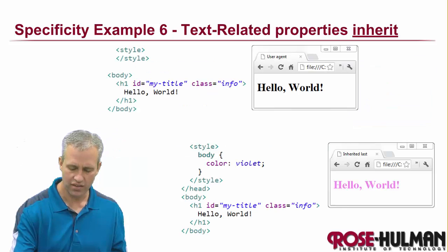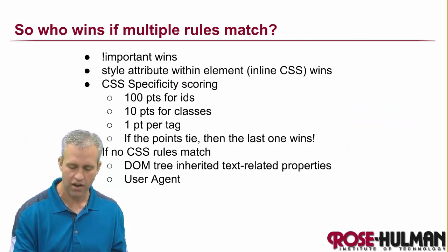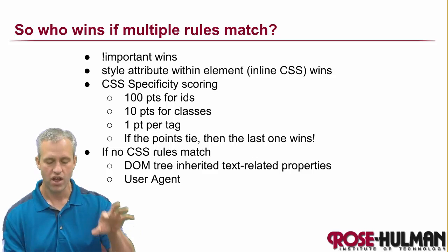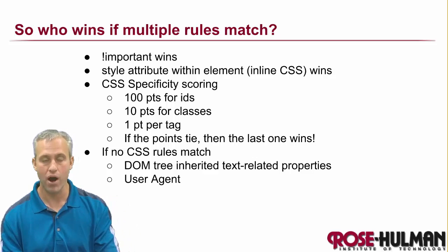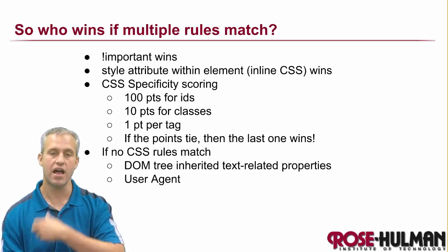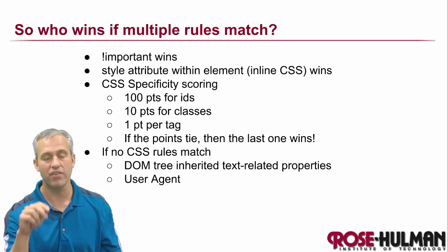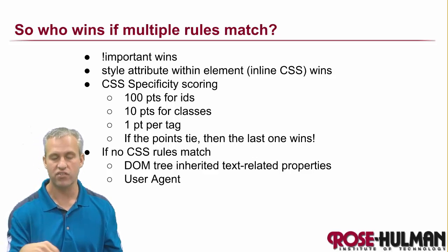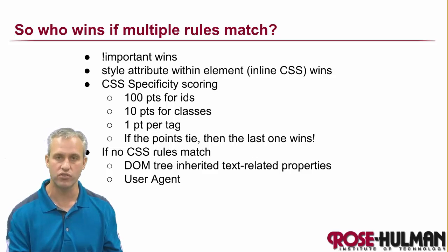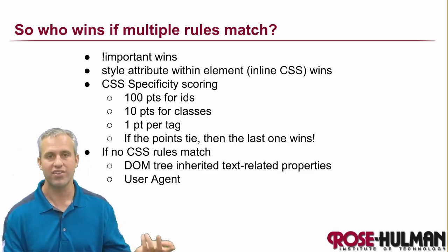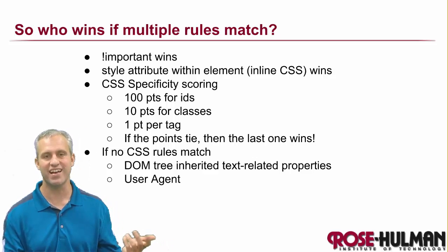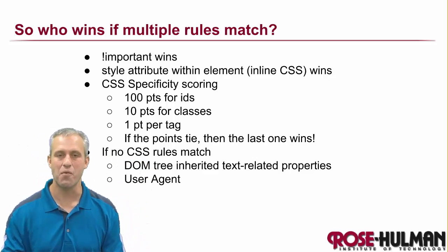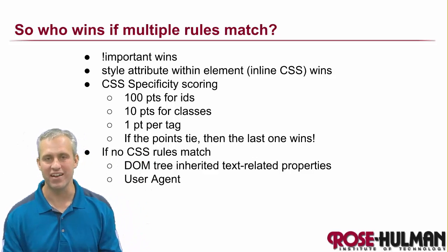That's the main take-home message for figuring out how a property gets decided upon. Keep in mind that for every property — and there are a lot of properties — it has to go through this decision process for everything, which is crazy how fast it works. You should hopefully know who wins in a fight now. See you next time when we talk about some advanced selectors.